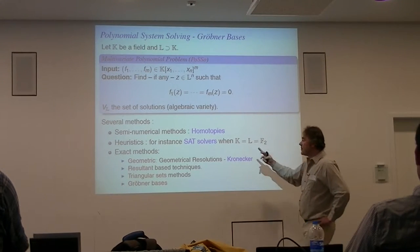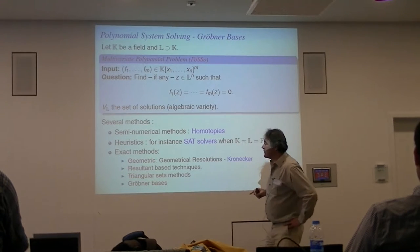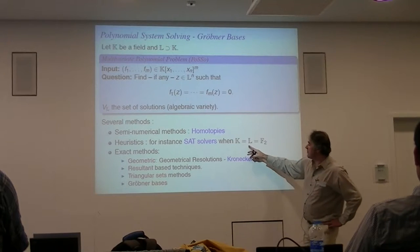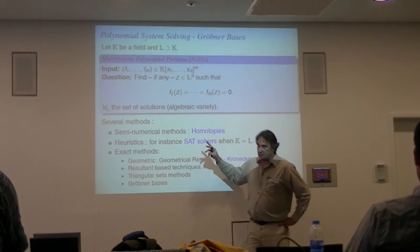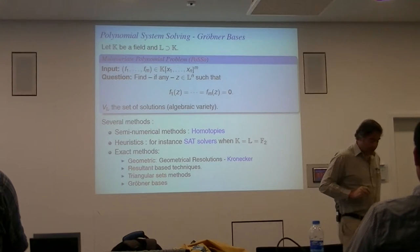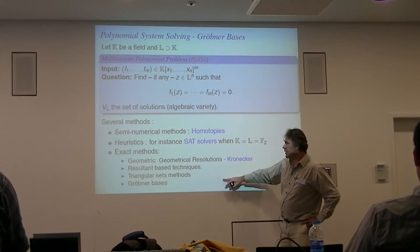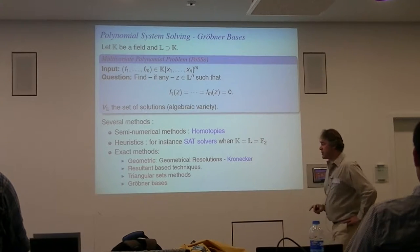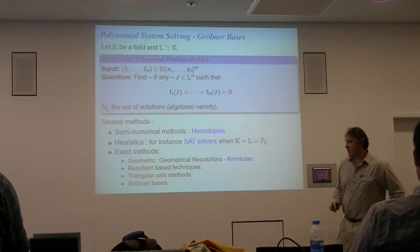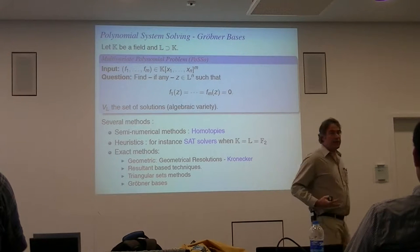For instance, we have numerical methods, which are also very efficient, and the motor-piece method. In the case of Boolean equations, you can use completely different solvers. For any exact method, we also have other techniques: geometrical resolution, resultant technique, triangular set method, and Gröbner basis is one of them.